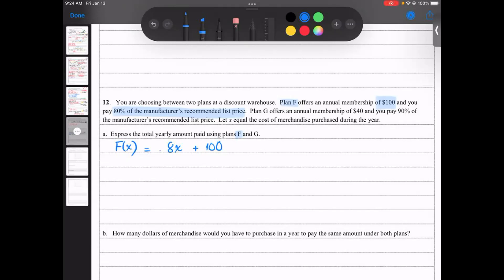So for every merchandise, you pay 80%. One merchandise, 80% of the merchandise. Two merchandise, two times 0.8. Three times 0.8, all the way to X times 0.8, and then 0.8X. Someone else come up with plan G. So G is G of X equal 0.9X plus $40. You're done, that's it, that's all they want. The two functions.